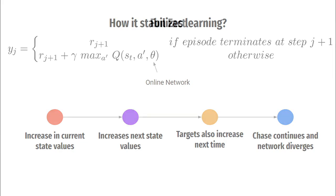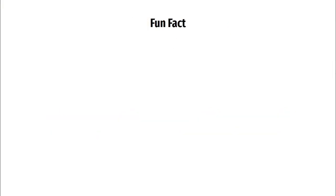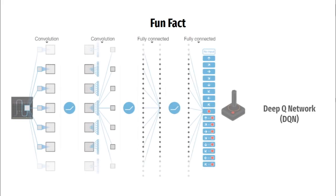One fun fact: this algorithm is commonly referred to as DQN, but that is not the algorithm's name. DQN stands for Deep Q-Network and is the name of the convolutional Q-network used in this algorithm. The name of the algorithm is Deep Q-Learning.